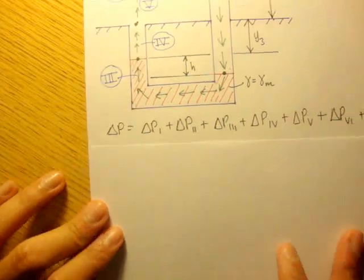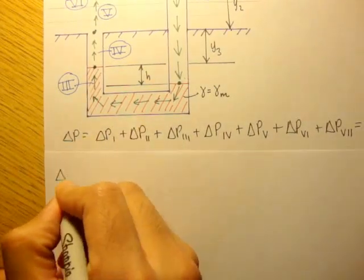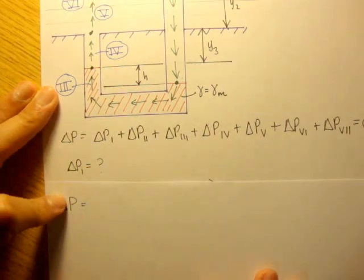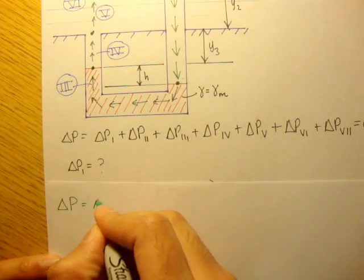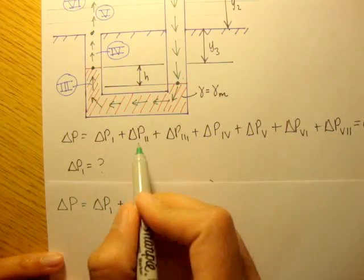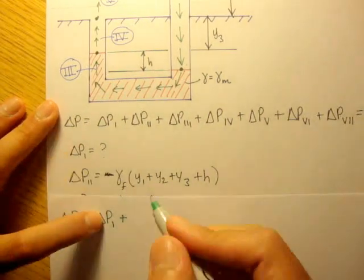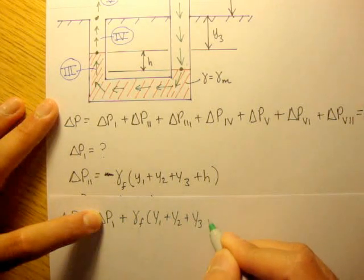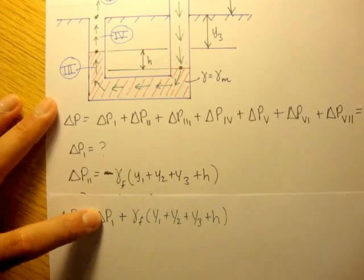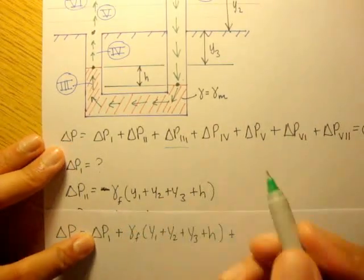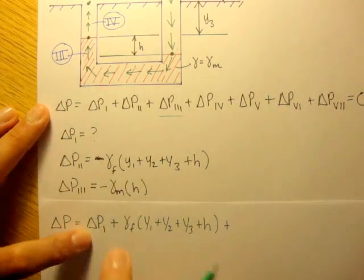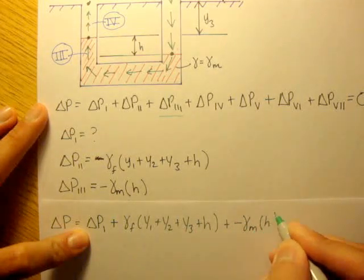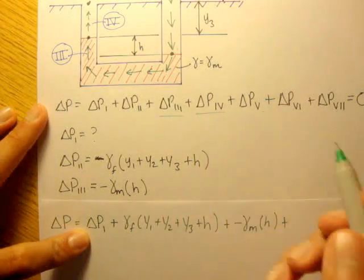So the change in pressure — delta P1 is a question mark. So we'll just say delta P1 plus delta P2. Delta P2 is gamma_F times (y1 + y2 + y3 + h), plus the pressure change of path 3, which we define to be negative gamma_m times h.